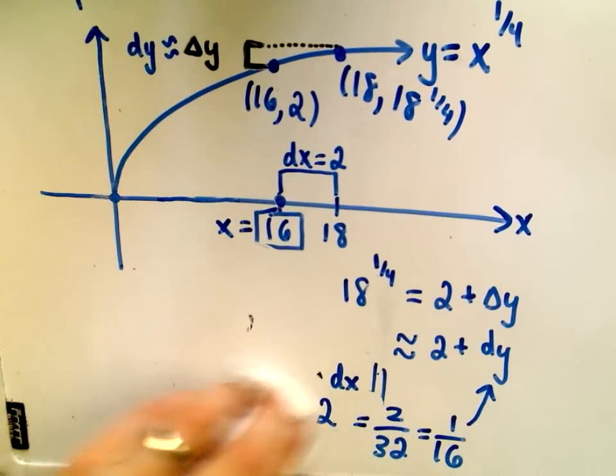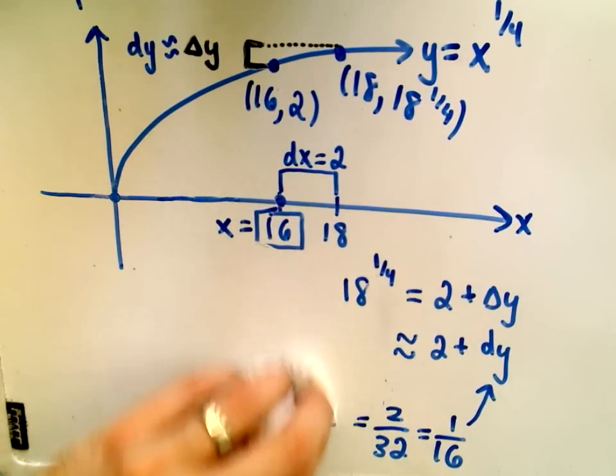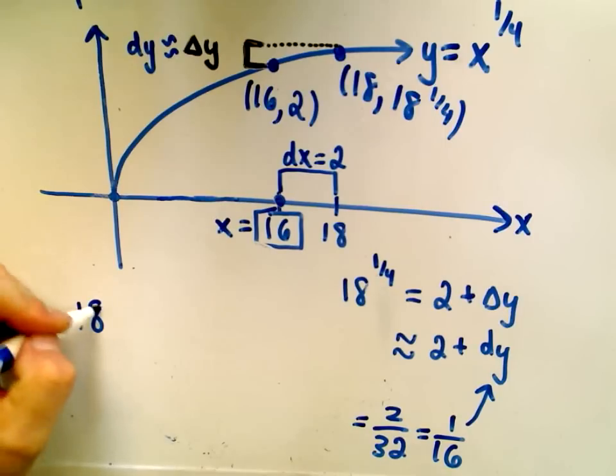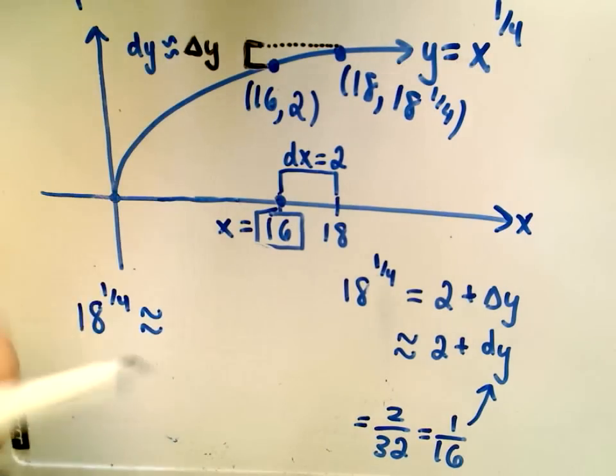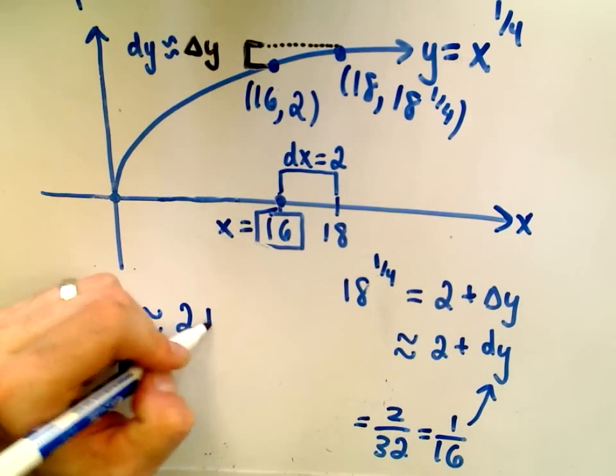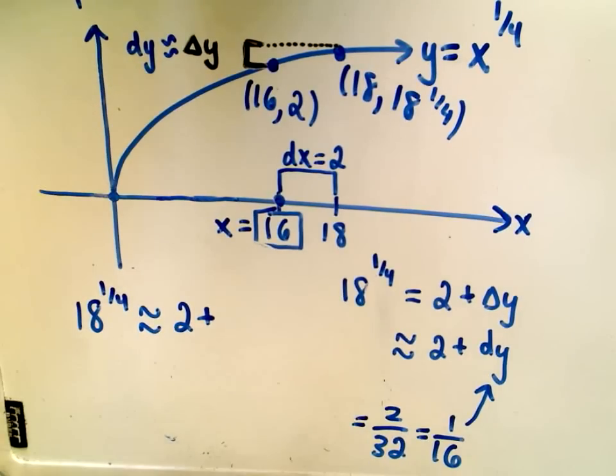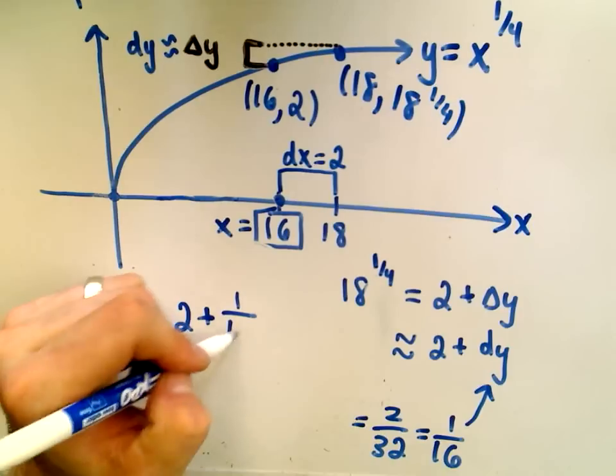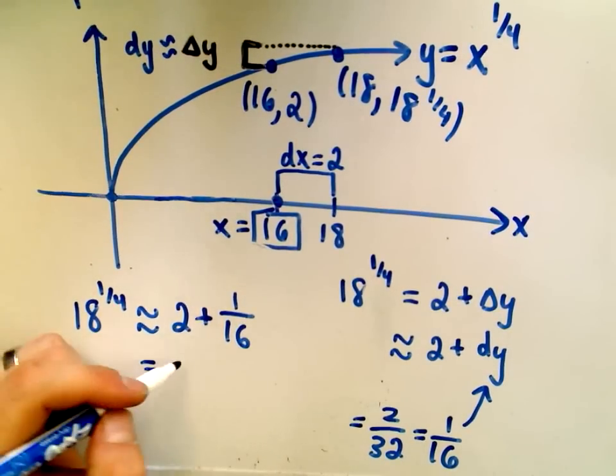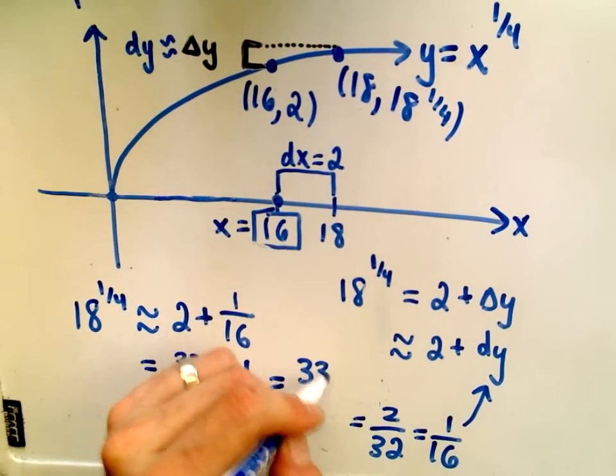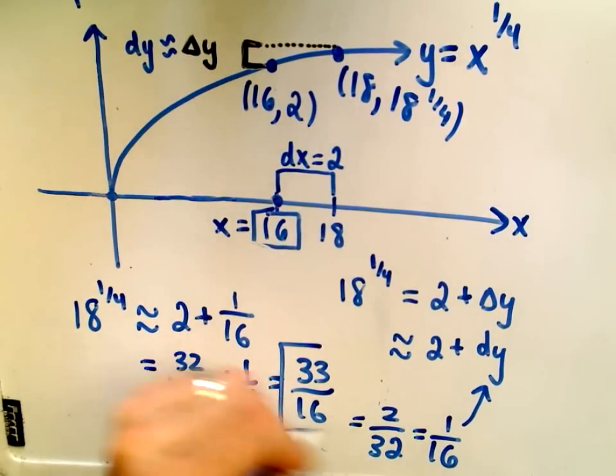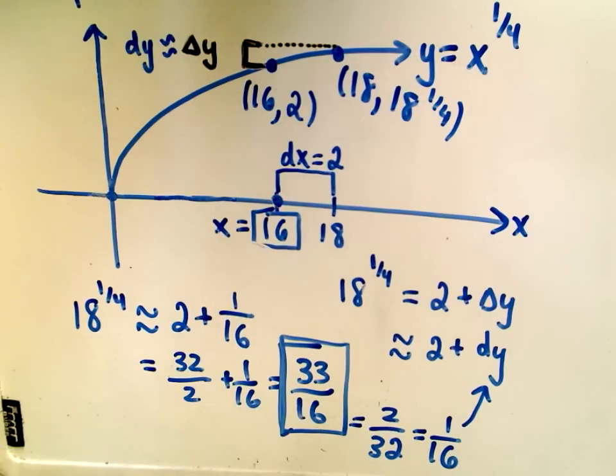In conclusion, we can approximate 18^(1/4). That's roughly going to be equal to the original y value, which was 2, plus our dy value, which we've worked so hard to calculate, which is 1/16. I can write 2 as 32/16, plus 1/16, which is simply 33/16. So an approximation to the 4th root of 18 would be 33/16.